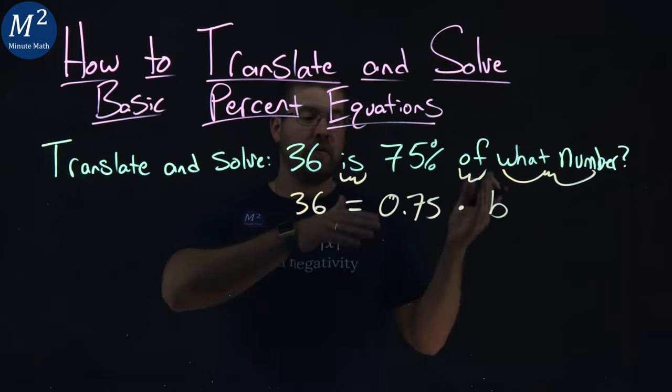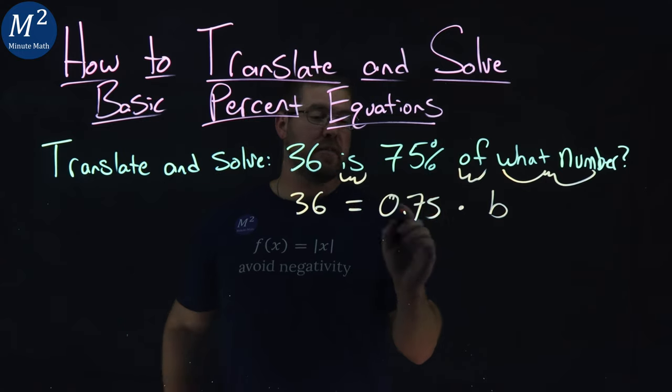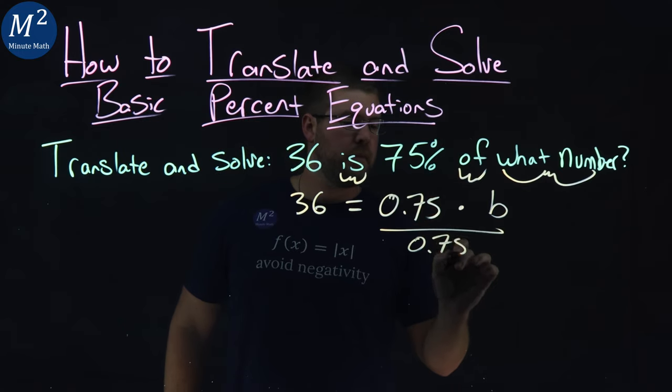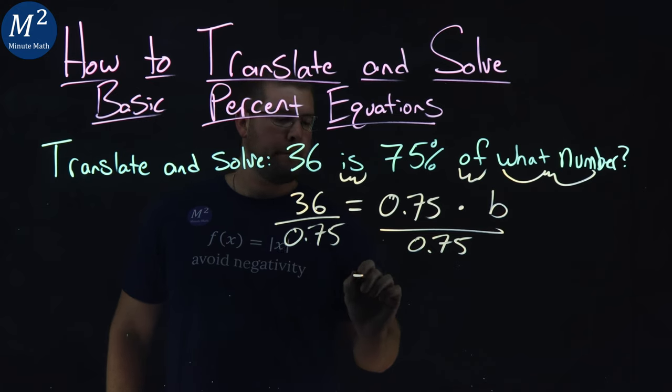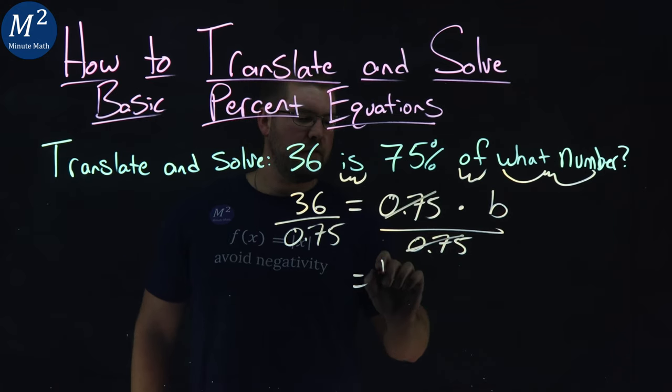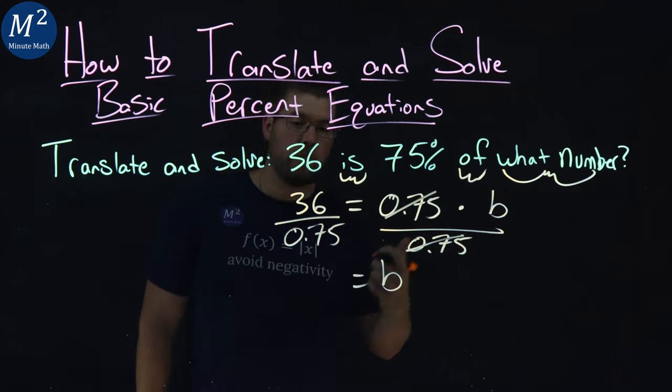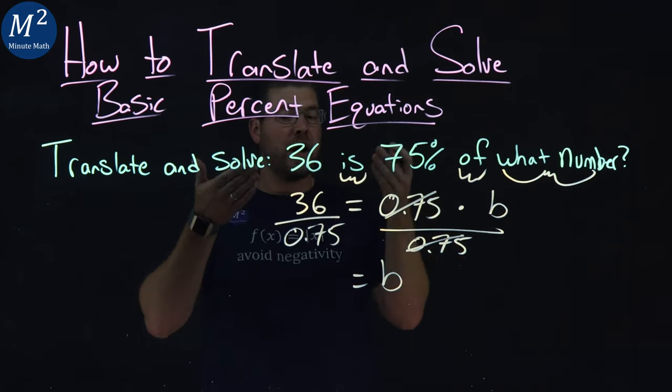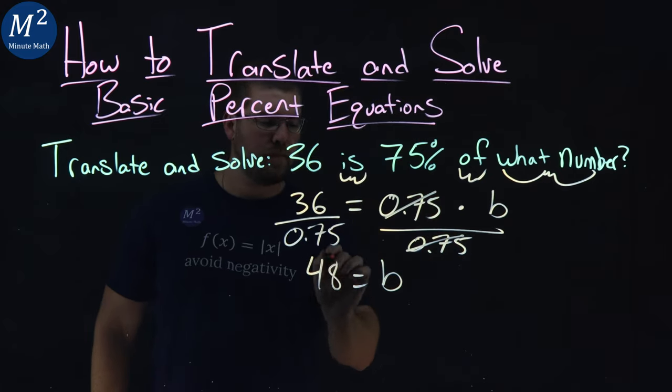Now to solve this equation, we have to divide both sides by 0.75. Let's do that here. B, by itself, because the 0.75 is canceled on the right, and 36 divided by 0.75 is a 48.